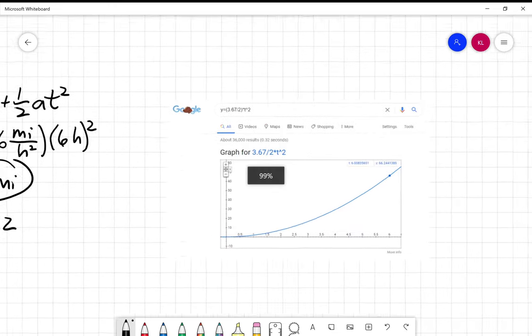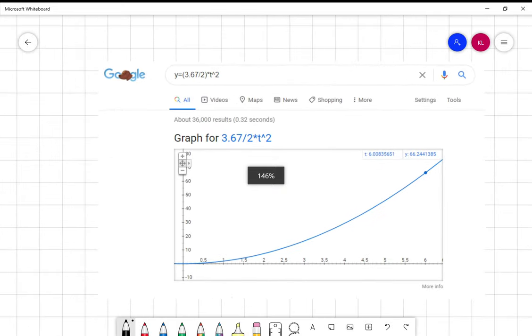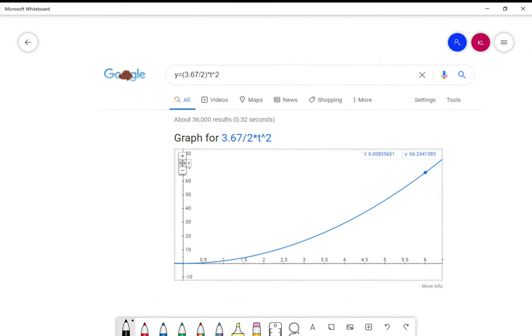And when you Google something Y equals, you're telling Google that you want a graph, and it will actually graph this equation for you. So here's the acceleration 3.6, here's the factor of one half and T squared. And if you check it out, indeed, at six hours, you have gone 66 miles.